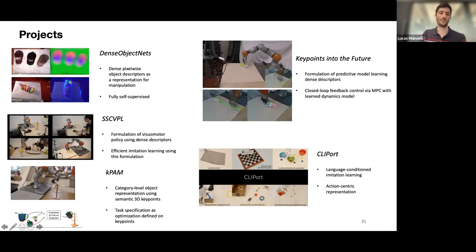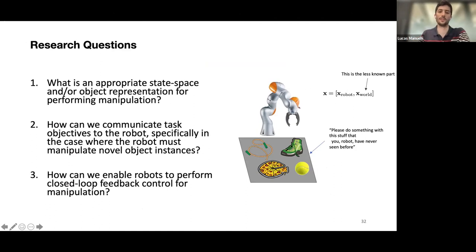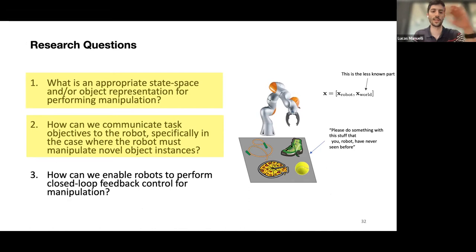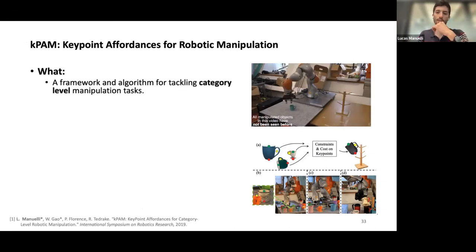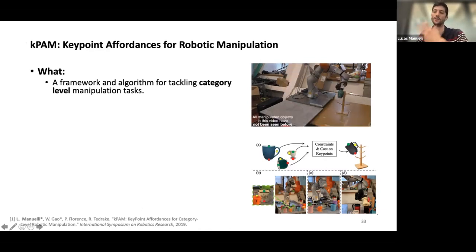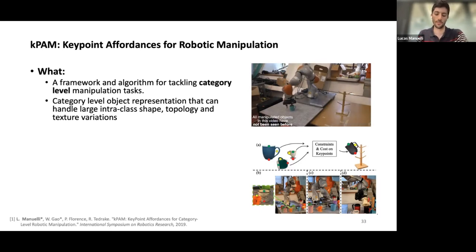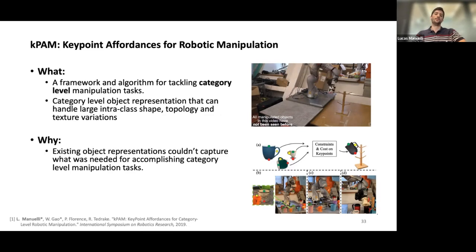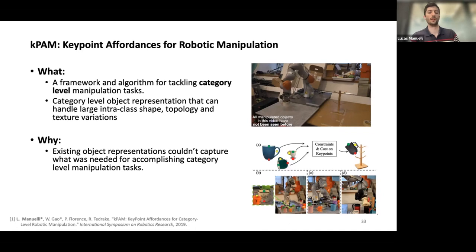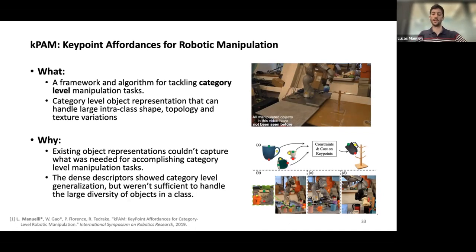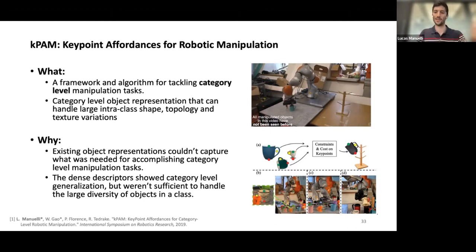Going slightly out of order, but in the order the work was done: I'll briefly discuss KPAM. It tackles the first two questions — not only how to represent objects, but also how to communicate task objectives to the robot. It's a framework and algorithm for doing category-level manipulation tasks. An example of a category-level task is: grab the mug and hang it on the rack, but do that for all mugs. It handles large inter-class shape, topology, and texture variation. Existing representations couldn't quite capture what you need for these tasks, and although dense descriptors are great, they have some limitations.